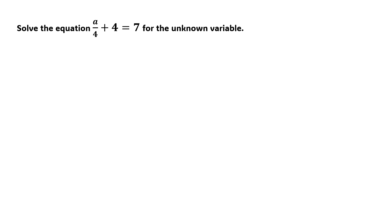In our equations today we will be solving for our unknown variable A. In solving these types of equations, remember that we are applying our two-step equation rules. Our whole goal is to get our unknown variable A on one side of the equation by itself.